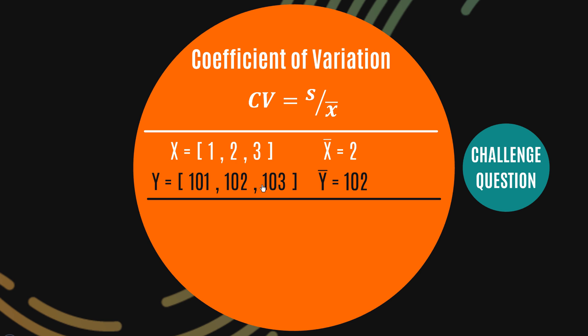Now the standard deviation of this X data set is going to be 1, but it's also going to be the same in this Y data set. Leaving the calculation of the standard deviation aside because we've done that in a previous video, you can see that all Y is is the X distribution just shifted up 100 points. So in terms of the spread of each of these two data sets, they have to be the same, right?